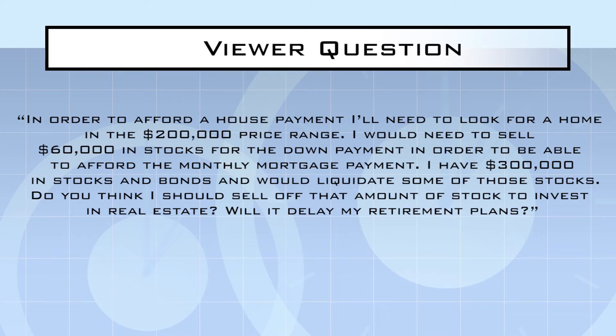In order to afford a house payment, I'll need to look for a home in the $200,000 price range. I'd need to sell about $60,000 in stocks for the down payment in order to be able to afford the monthly mortgage payment. I have $300,000 in stocks and bonds and would liquidate some of those.